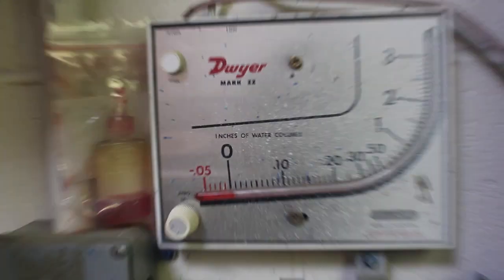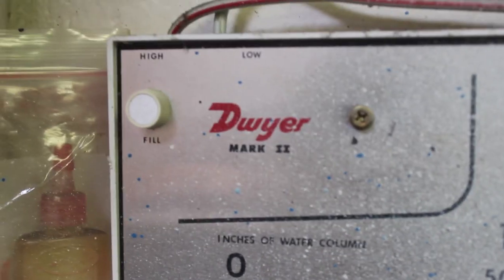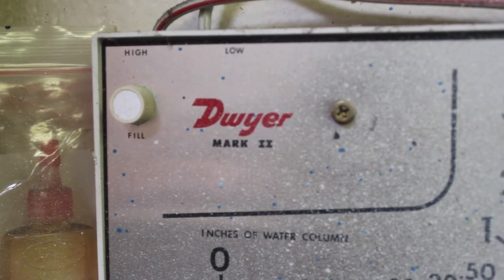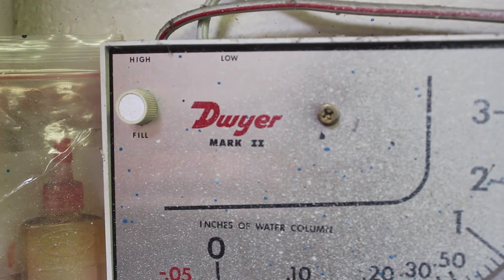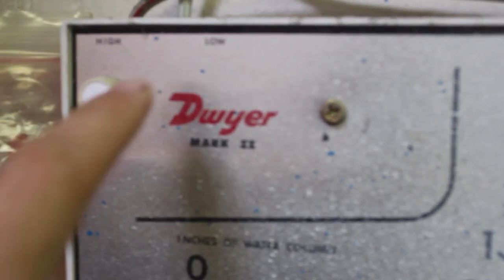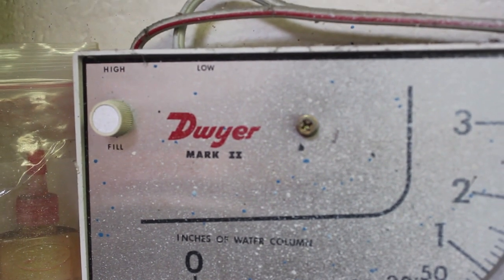To install the spray booth manometer, you mount it on the exterior of the booth or nearby and there are two hoses that will come into the unit. You'll notice as noted here, high and low are the two hoses that will come in.